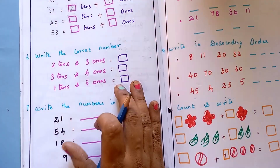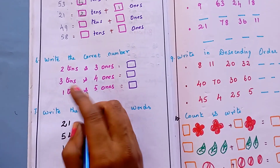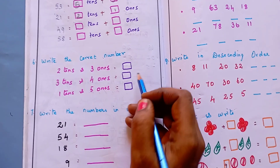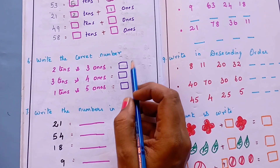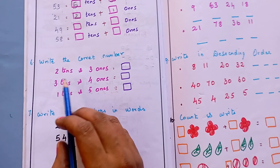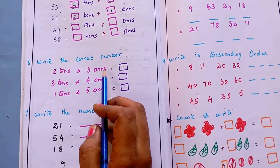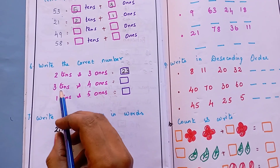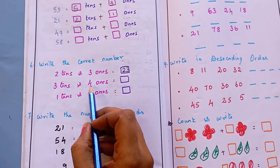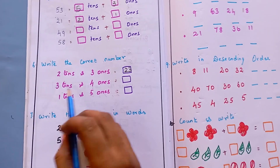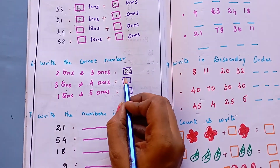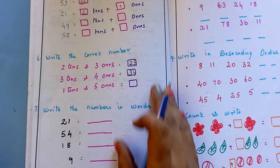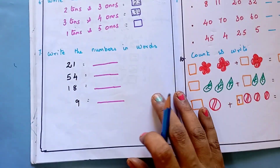The next question is: write the correct number. Here I have given something like 2 tens and 3 ones — the kid has to find and write the correct number. So 2 tens and 3 ones means 23. Then 3 tens and 4 ones — 3 tens means 34. Like this, the kid has to write and complete it.